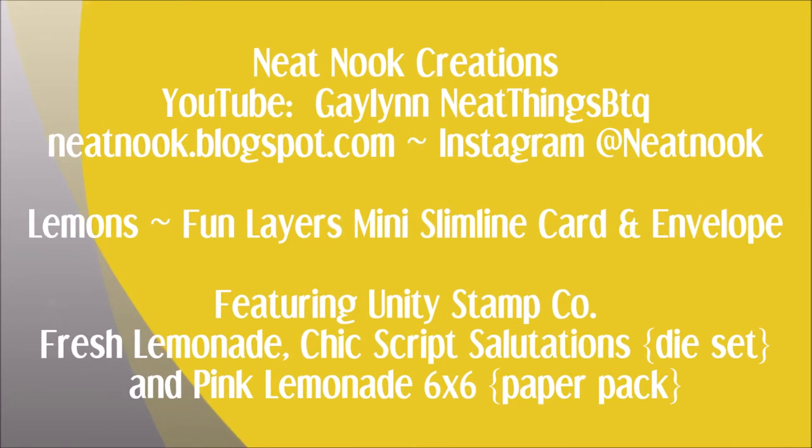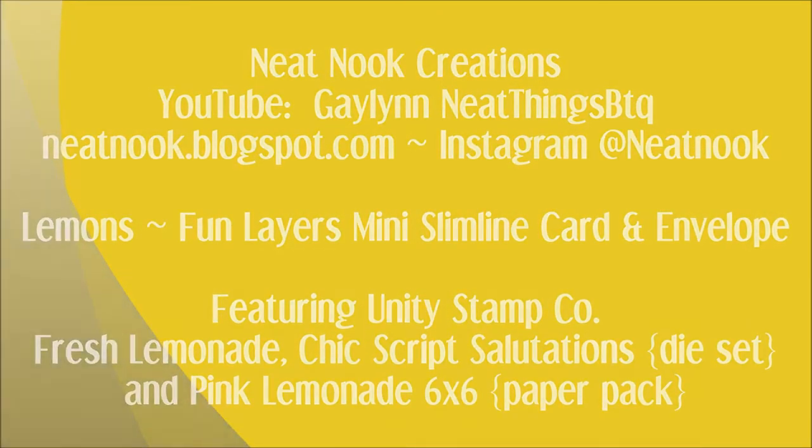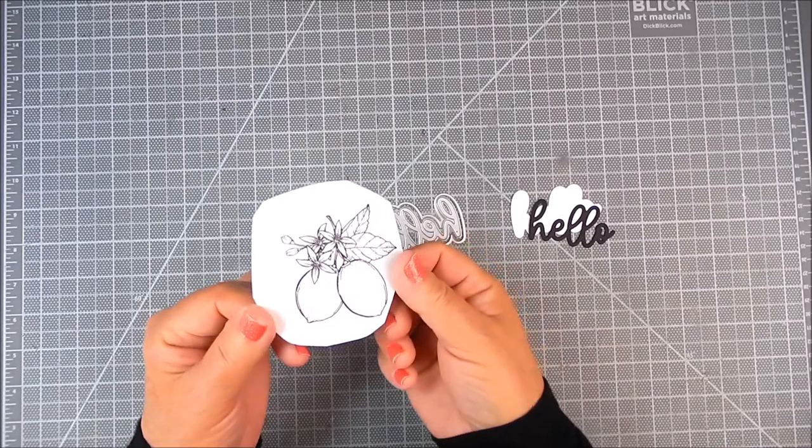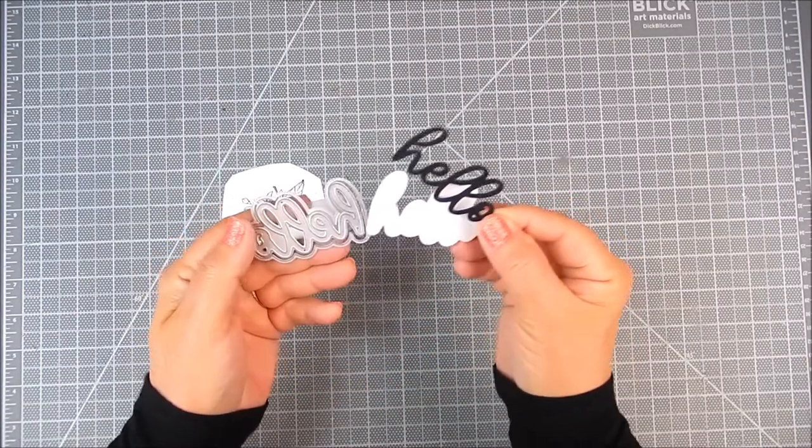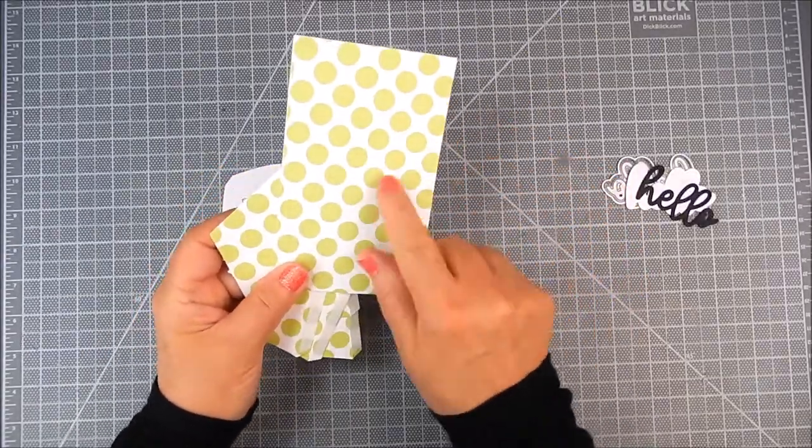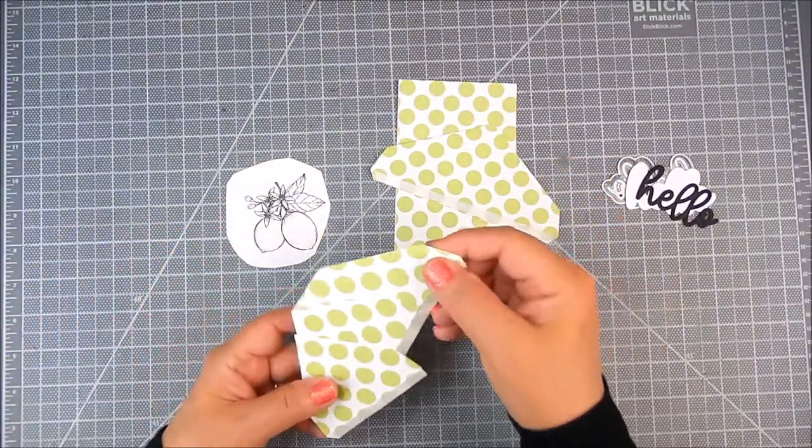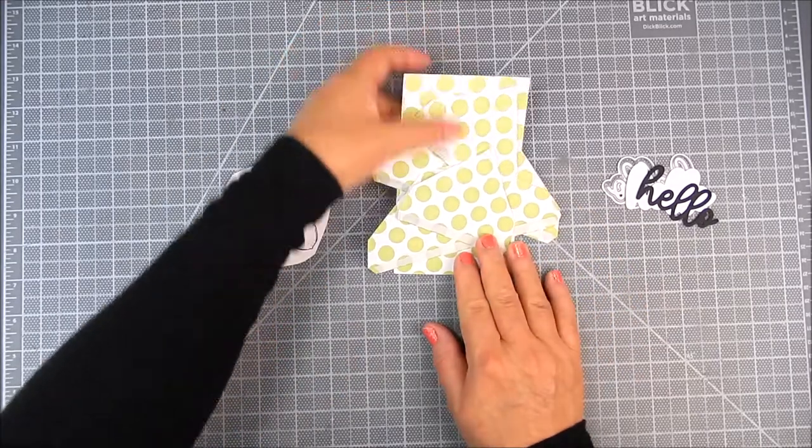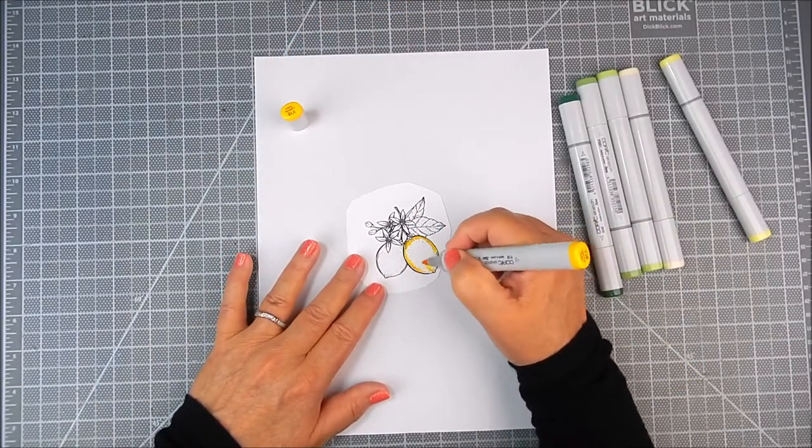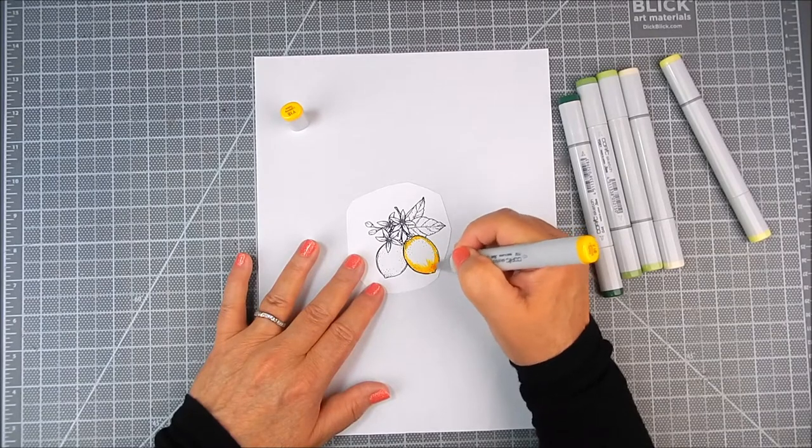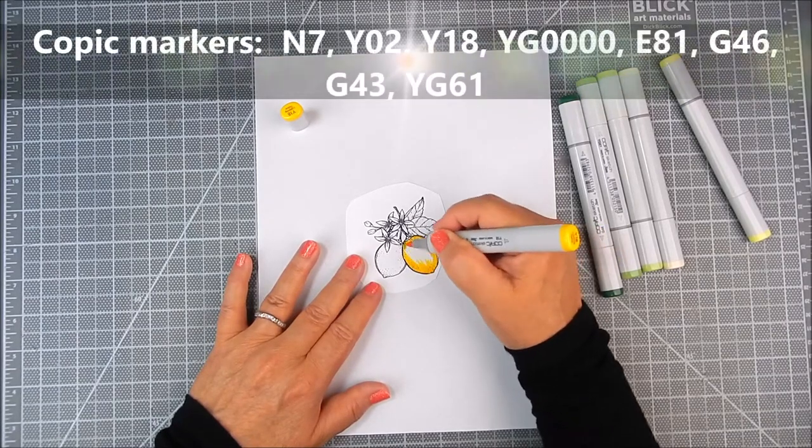And so for the stamping, I'm using Unity Stamp Company Fresh Lemonade. That's a lemon stamp with leaves there. I'm going to use Copic Coloring for that one. Also I'm using Chick Script Salutations. It's a die set that has that word in it, hello. It also has some more items in there that are great for card making.